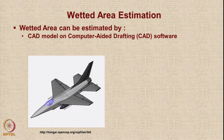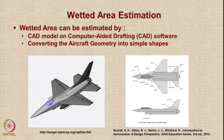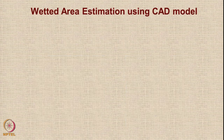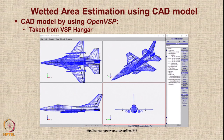The wetted area can be estimated by making a CAD model in software such as OpenVSP, which gives you the wetted area directly. We have already covered OpenVSP in detail. The other option is to convert the geometry into standard simple shapes like cylinders, cones, rectangles, and half cylinders, then calculate the wetted area of each component. We did both: first we used OpenVSP with a model taken from the VSP hangar.